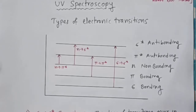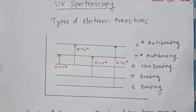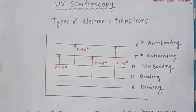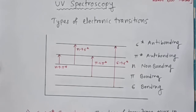Dear students, today we will discuss UV spectroscopy, that is ultraviolet spectroscopy. When a molecule absorbs UV radiation, the electrons present in the molecule get excited and are promoted to a higher energy level, and different types of electronic transitions occur in the molecule.